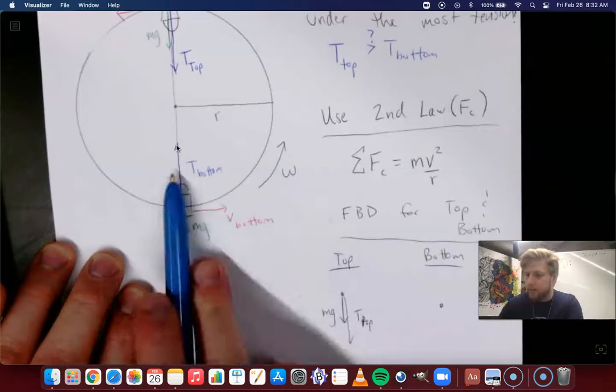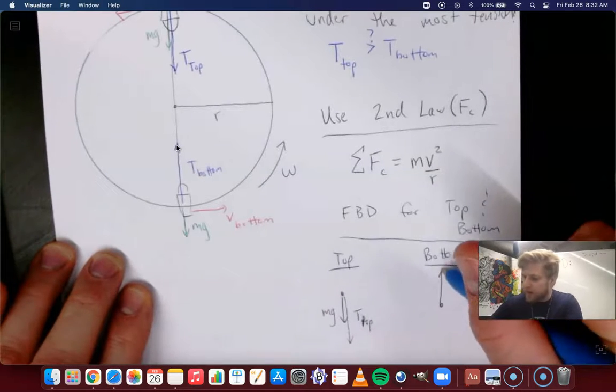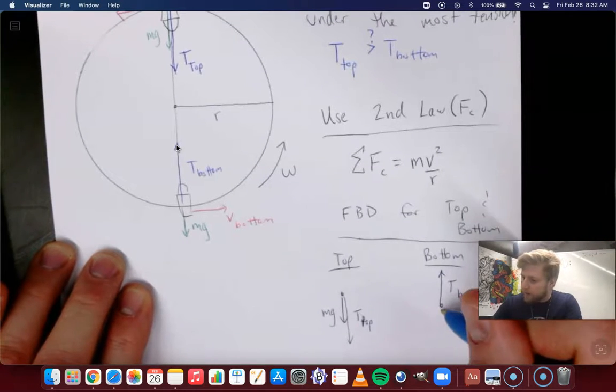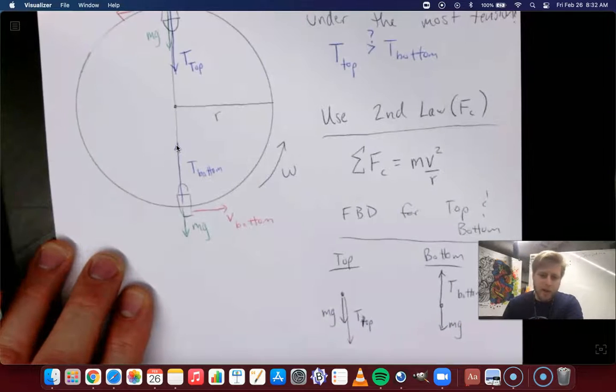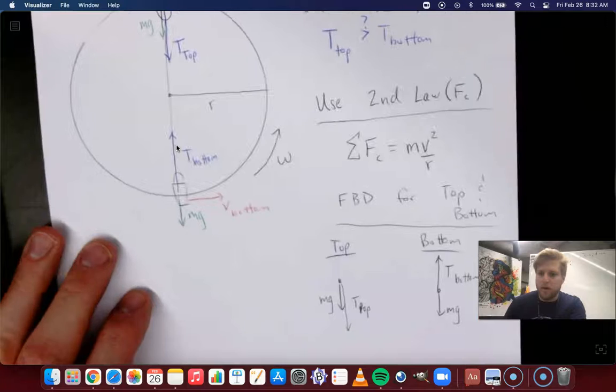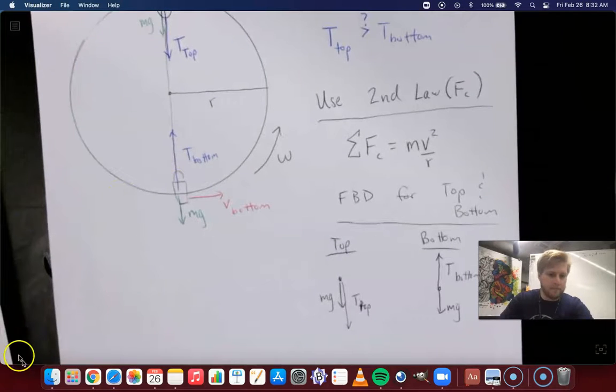Let's set up that free body diagram. At the bottom, we're going to have tension, we'll call that t bottom. And then we've got mg. Now, again, we're being a little naive here, we don't know the lengths of those vectors, we don't know if they're equal, we don't know which one is bigger.